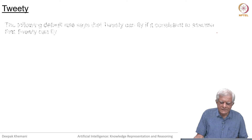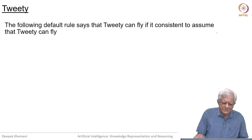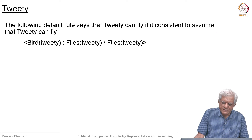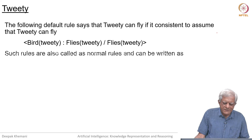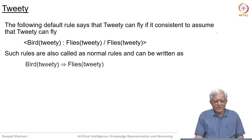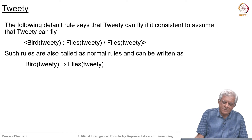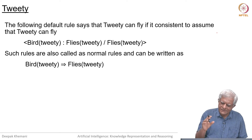Let us talk about Tweety. The fact that birds can fly is expressed as follows: if Tweety is a bird and it is consistent that Tweety can fly, then Tweety can fly. This is called a normal rule, and we often write it directly without writing the justification, because the justification is the conclusion itself — if the conclusion is consistent, go ahead and make it.